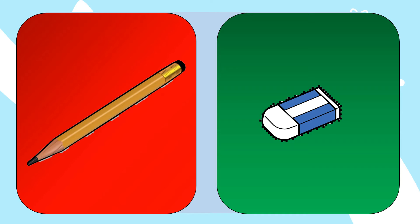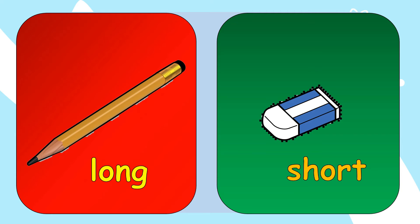Let's identify the length of the given objects. Let's have a pencil and an eraser. The pencil is long, and the eraser is short. What is the length of the pencil? It's long. How about the eraser? Short. Great job, kids!